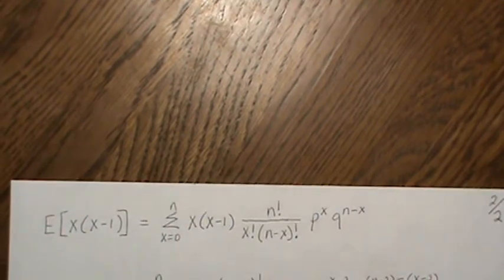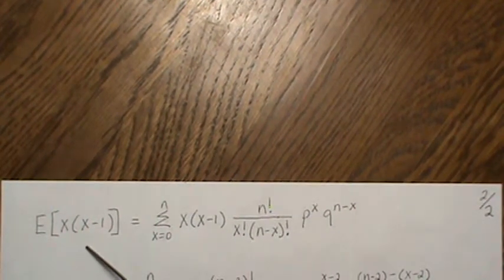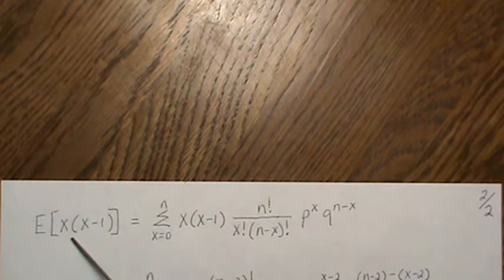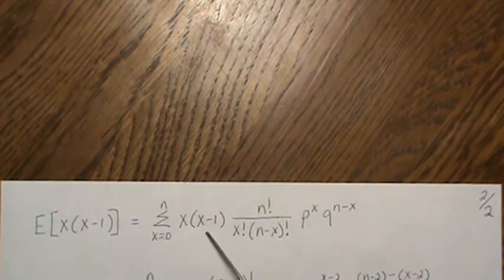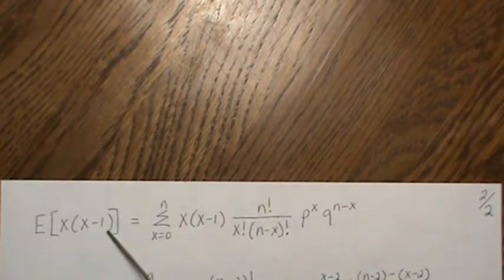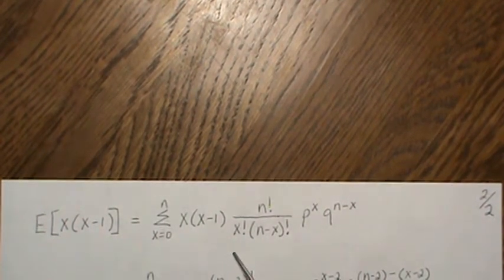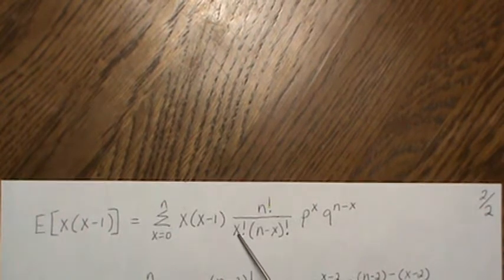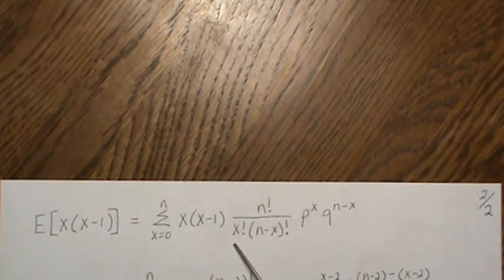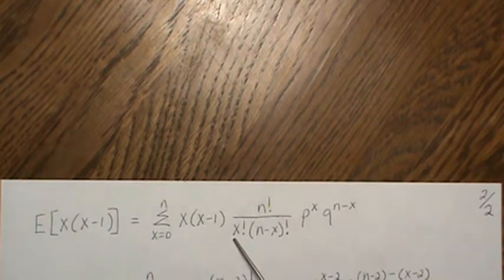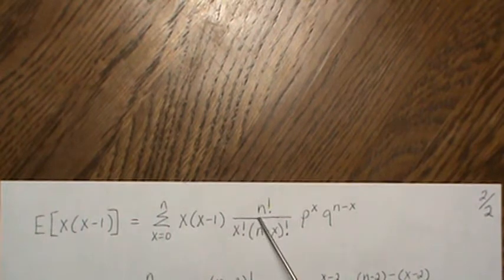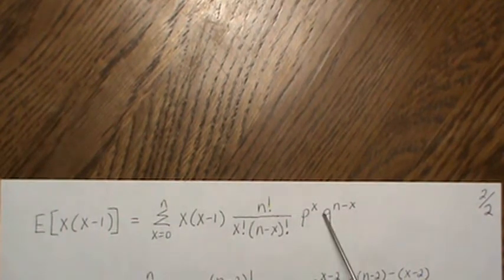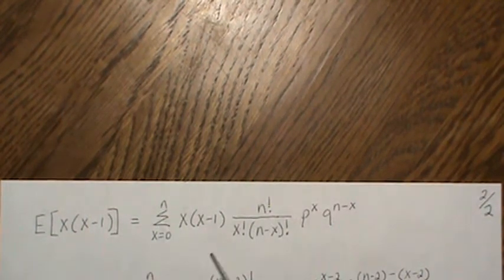Now before we do the variance, we're going to look at, it's kind of like a factorial expectation. We're going to look at this, so that means we're going to sum over all values, and we're going to put in the x minus 1 here and here. So now what we do is, this right here is x times x minus 1 times x minus 2. So a couple of those will cancel, and then I'm also going to take out an n and an n minus 1 and one of these p's.